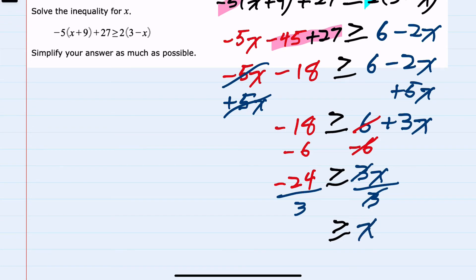And on the left-hand side, negative 24 divided by 3 is negative 8. So we have simplified this inequality as much as possible.